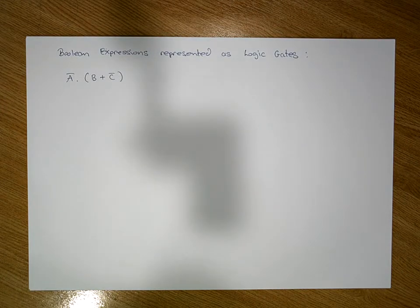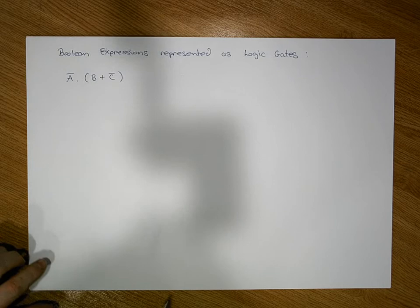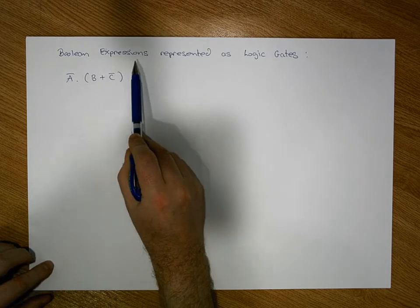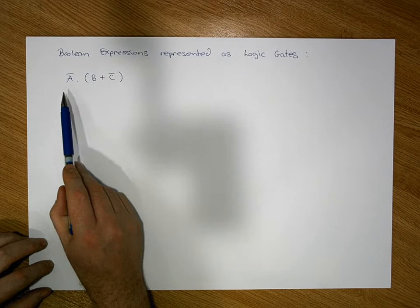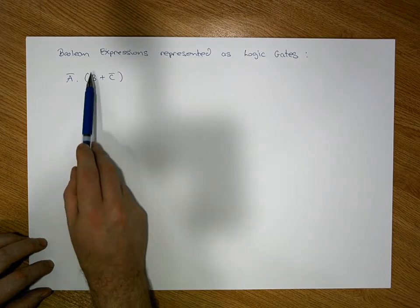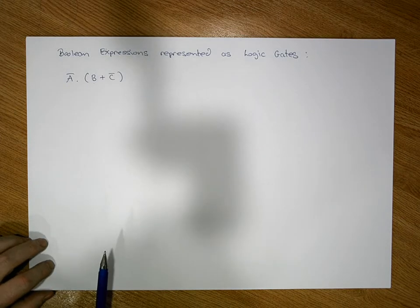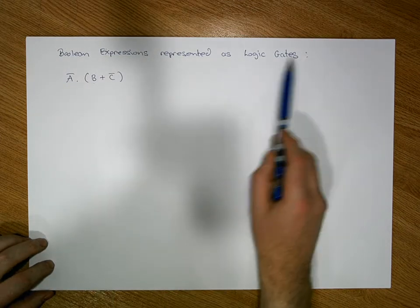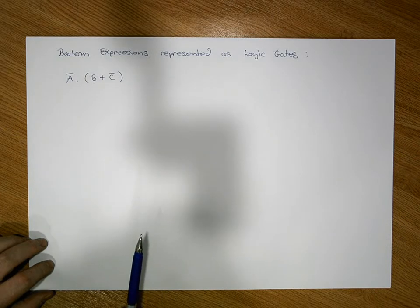Hi guys, this is Jonathan Lambert with the Mathematics Development and Support Service at the National College of Ireland. This short video is going to walk through the process of how to take a boolean expression and how to represent it as a logic gate. The expression that we're going to consider in this example is A bar ANDed with B OR C bar, and we're going to build a set of logic gates to represent this circuit.